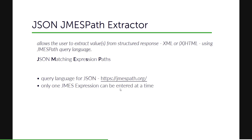The JSON JMESPath extractor is a type of post-processor element in JMeter. The official definition is: it allows the user to extract values from a structured response such as XML or XHTML using the JMESPath query language. JMESPath stands for JSON Matching Expression Paths. It's a query language for JSON where you can write a simple query, it will traverse the element, give the response, and you can do a lot of things — for example, sorting, piping, or slicing.